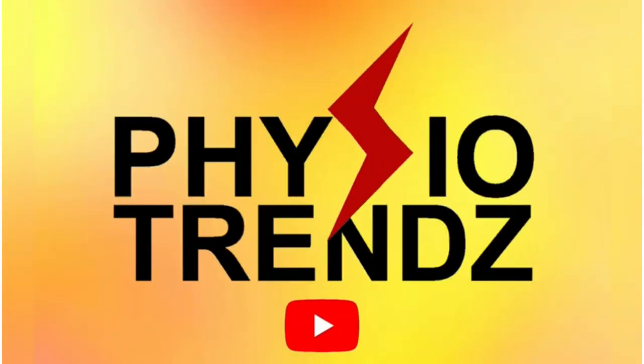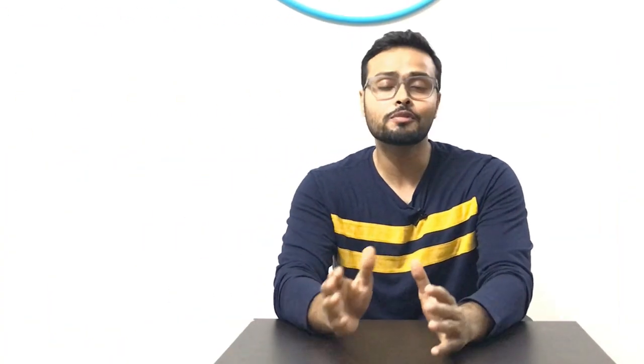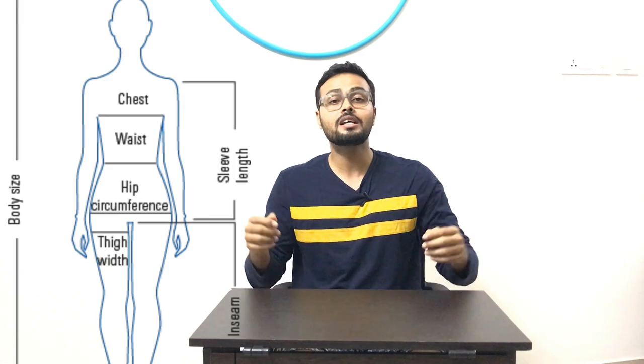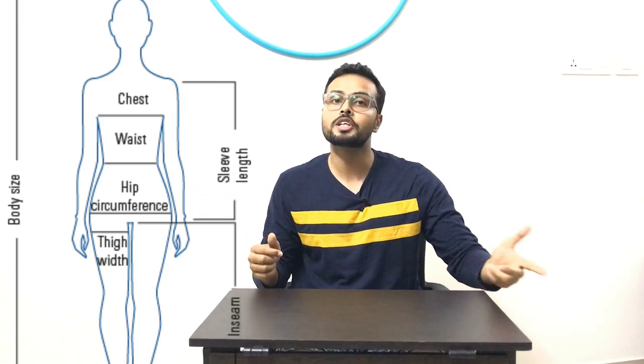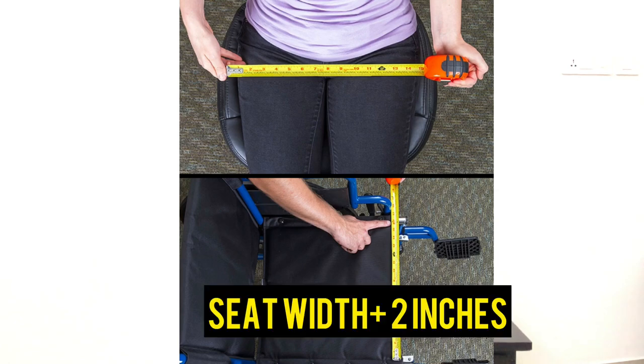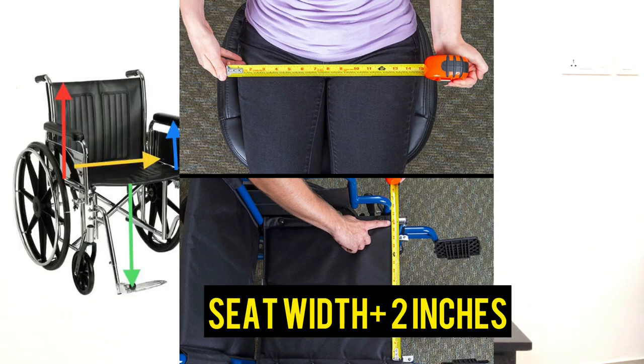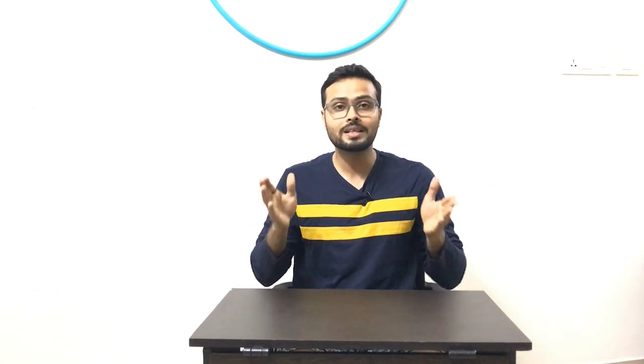The first key measurement is seat width. This can be taken in supine lying position as well as in the sitting position. The therapist will be measuring the widest part of the hip for the seat width measurement, and after that they have to add two inches more to whatever measurement has come.